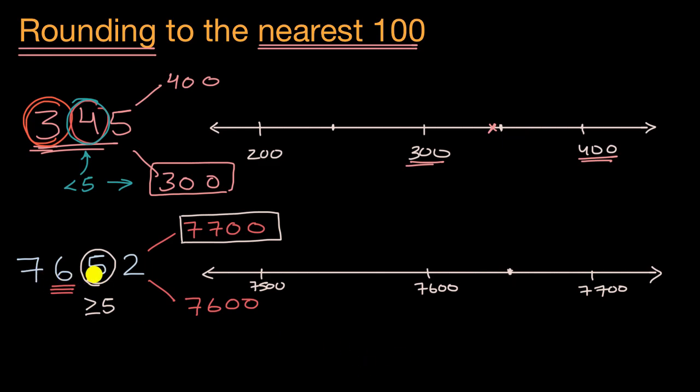And so 7,652 is going to be a little bit more than that. It's going to be a little bit more. And since you can see, it's either right in the middle or to the right of right in the middle, we would round up to 7,700, which is exactly what we just did.